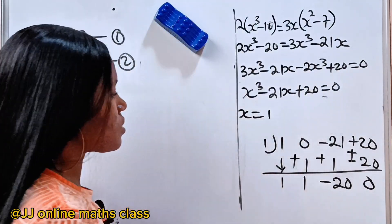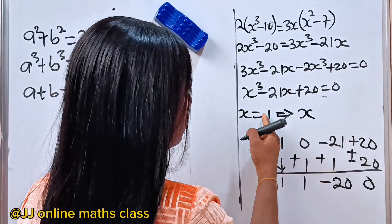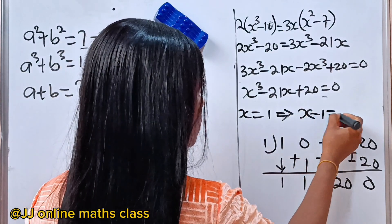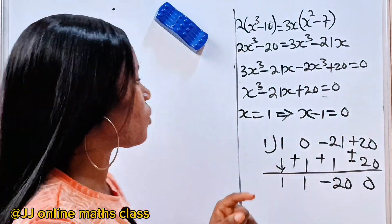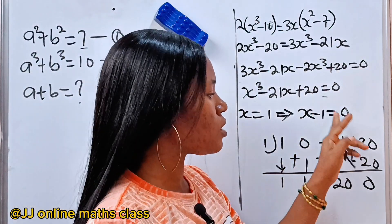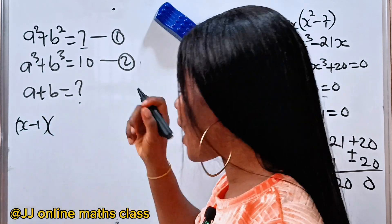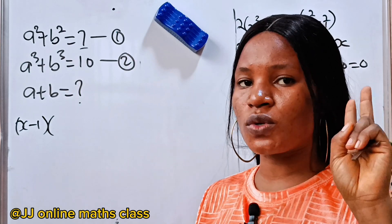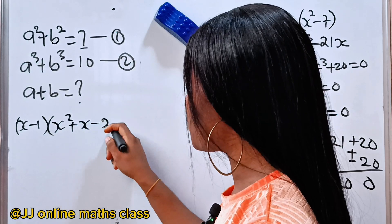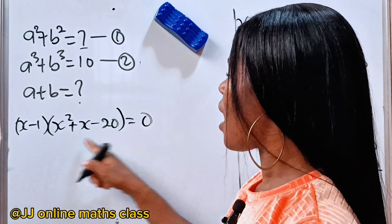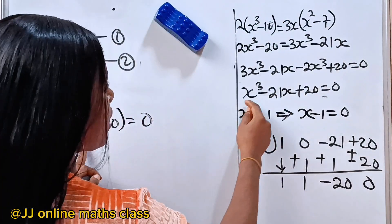So the first root is x equals 1, which gives the factor x minus 1 equals zero. The full factored form is x minus 1 times x squared plus x minus 20 equals zero.